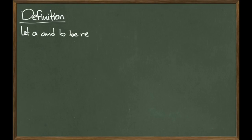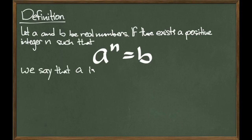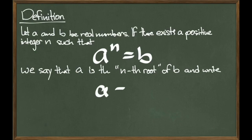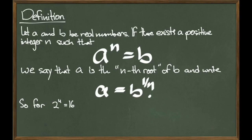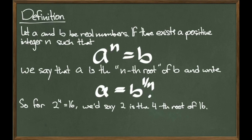Let's look at the definition. Let a and b be real numbers. If there exists a positive integer n such that a to the n equals b, we say that a is the nth root of b, and we can also write that a is equal to b to the 1 over n. So the first statement is saying that I can take a to the nth power and get b in return, and the second statement is saying that I can take b to the 1-over-n power and get a in return. So a and b have this special relationship that depends on this number n. General definitions can seem kind of weird at first, but we just saw this in the previous slide. So we know that 2 to the 4th is equal to 16, and now we can say that 2 is the 4th root of 16.